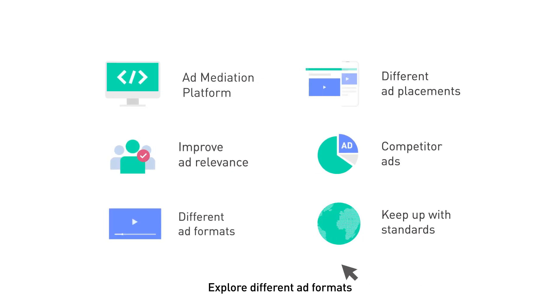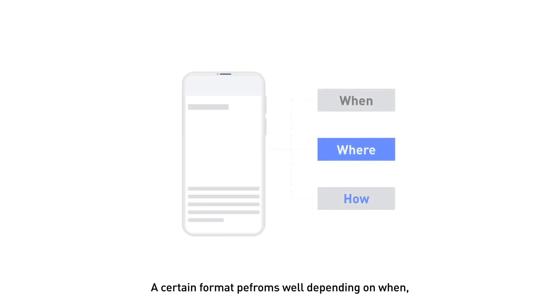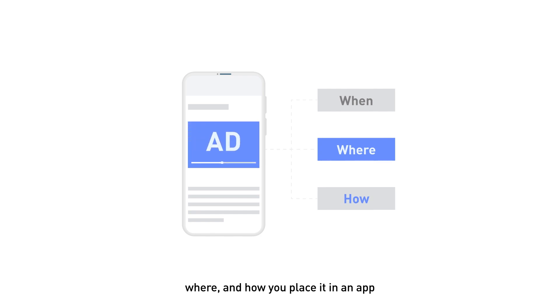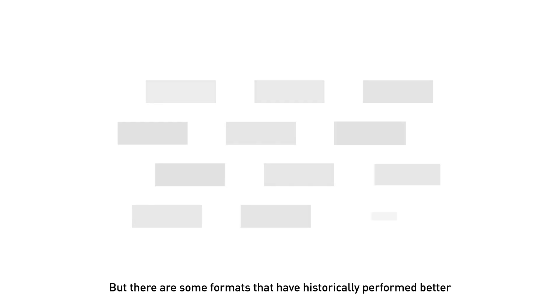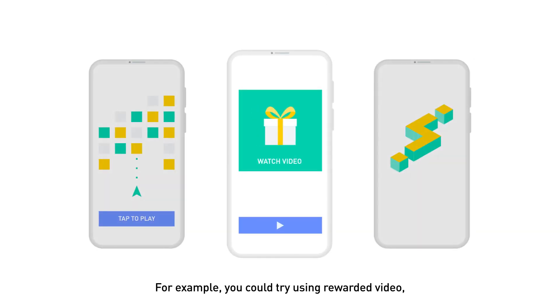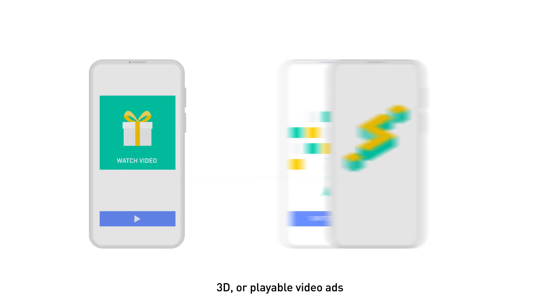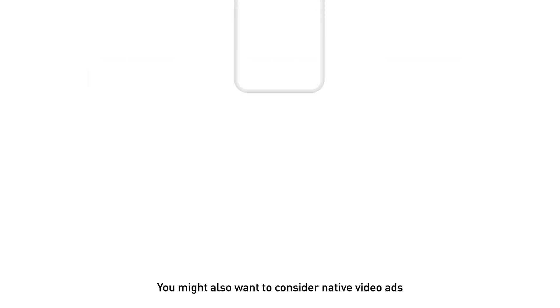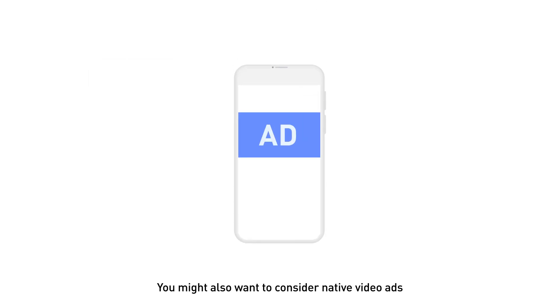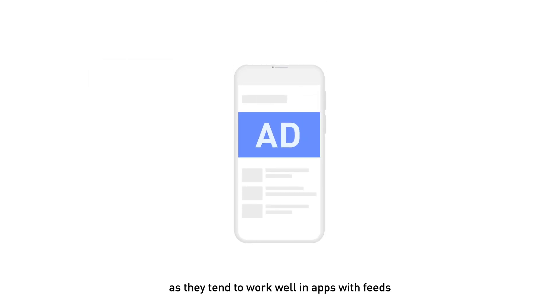Explore different ad formats. A certain format performs well depending on when, where, and how you place it in an app. But there are some formats that have historically performed better. For example, you could try using rewarded video, 3D, or playable video ads. You might also want to consider native video ads, as they tend to work well in apps with feeds.